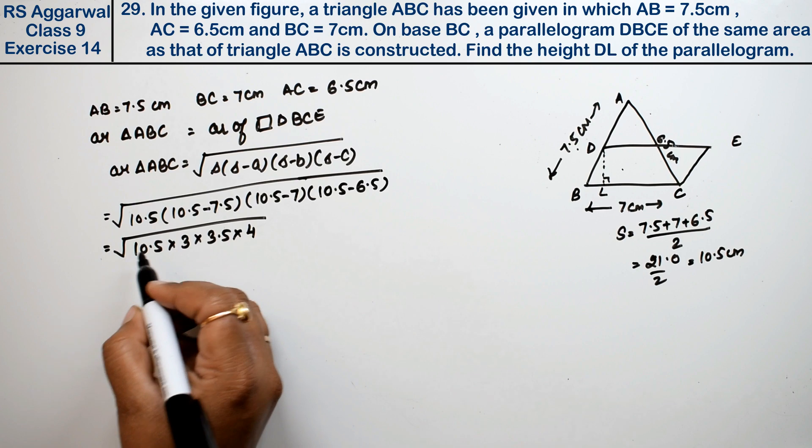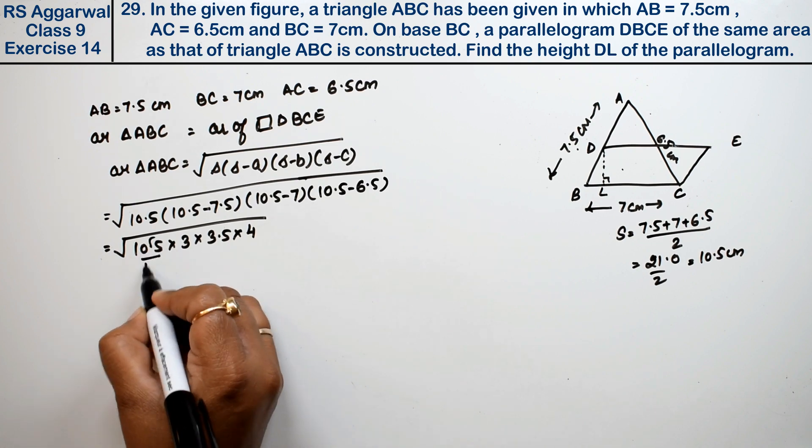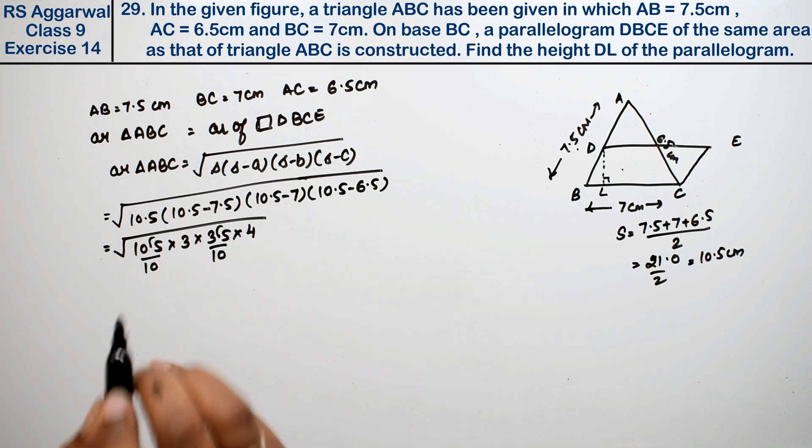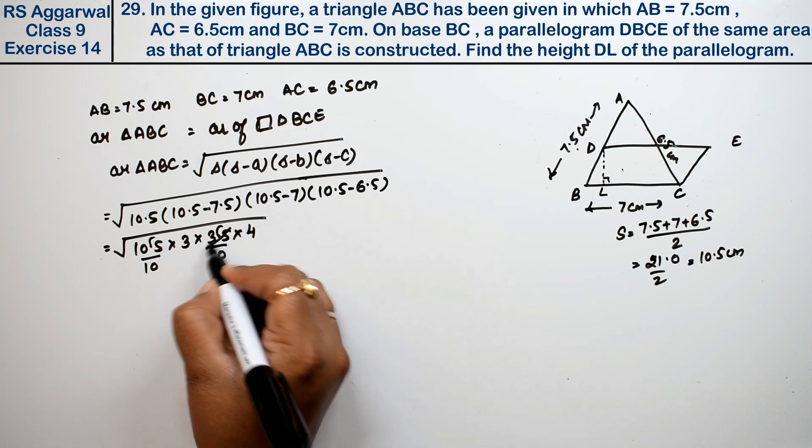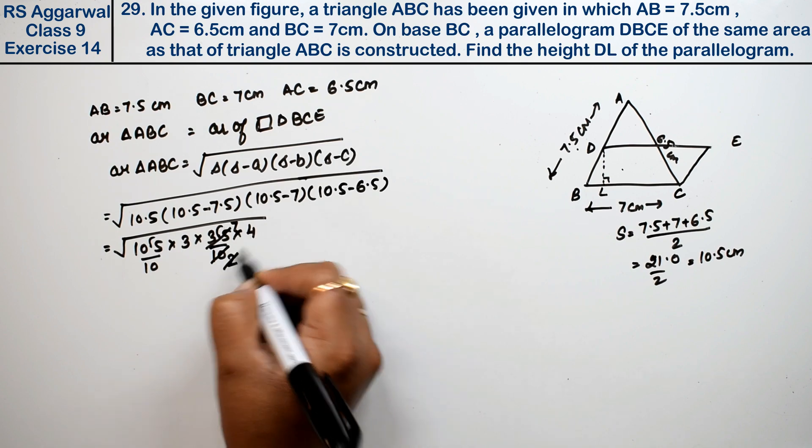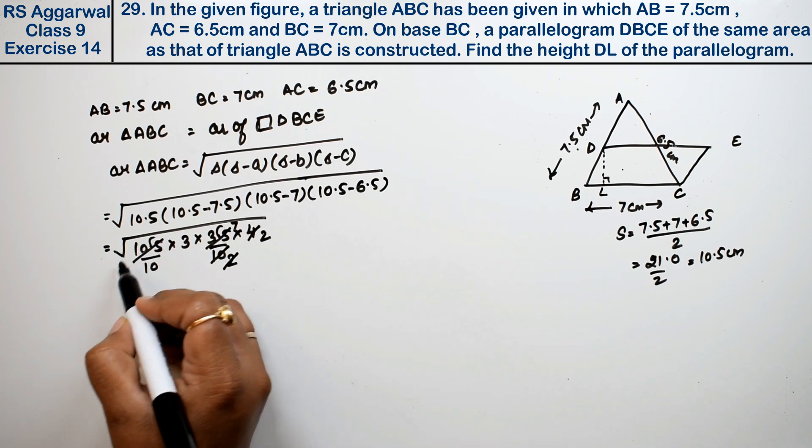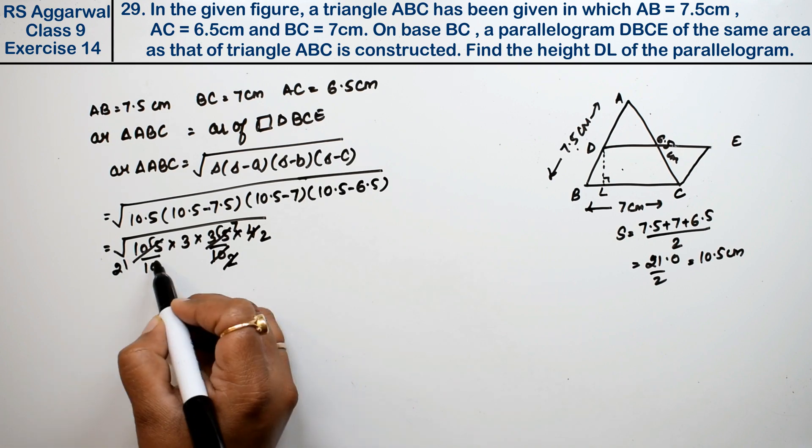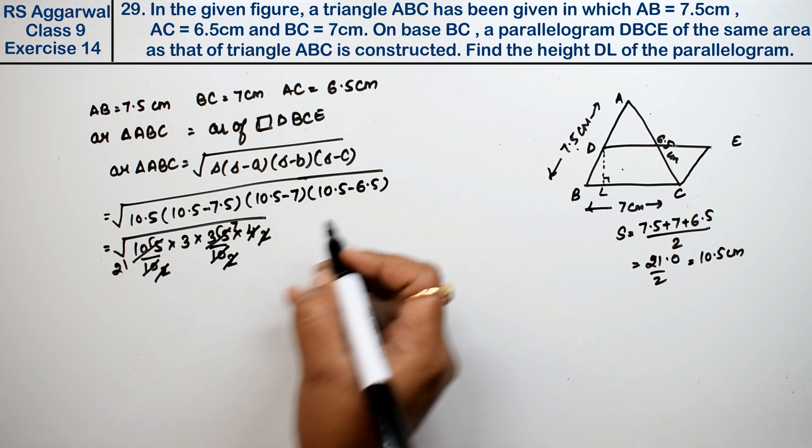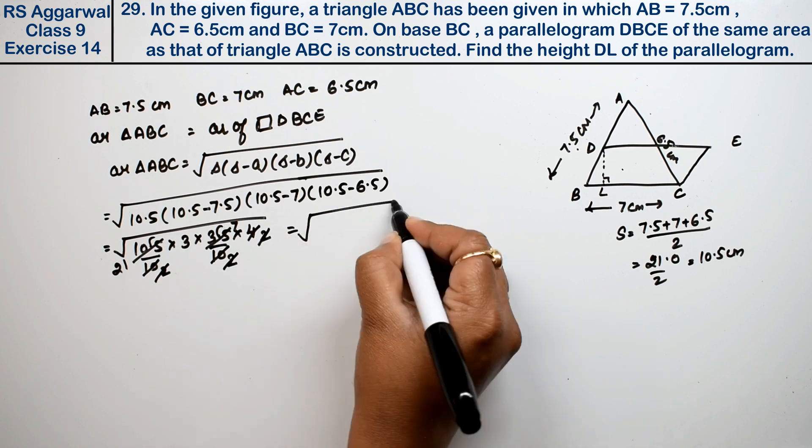Now removing the decimal point, this becomes 10 in the denominator. Multiplying these: 5 times 7 is 35, 5 times 2 is 10, 2 times 2 is 4, and so on. After canceling the 2s, we get square root of 21 into 3 into 7.